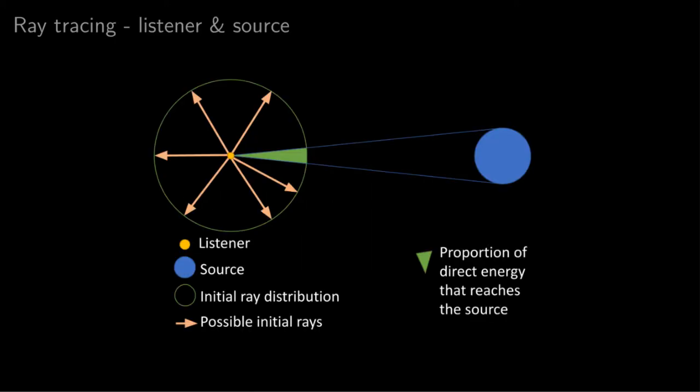The first thing that the raytracer does is to check whether the sources are visible from the listener or whether the path is obstructed by a wall or an object. If it's visible, then we create a sound event that corresponds to the direct sound. And as you can see on the screen, we give a volume to the sources so that we can calculate the proportion of the initial energy that reaches it. And that proportion will be the energy contained in the sound event that we create.